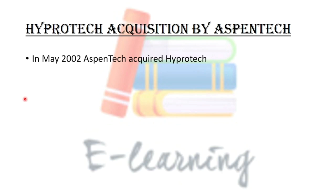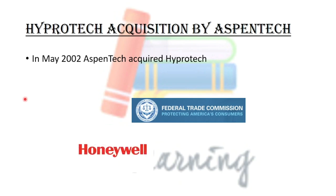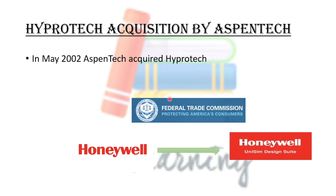In 2004, the US Federal Trade Commission gave a ruling which forced AspenTech to divest its Hyprotech assets, including the HySys source code. As a result, they had to sell it to Honeywell, another US company. Honeywell then developed another process simulation software and called it Unisim Design Suite, which was very similar to HySys.